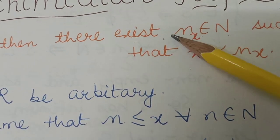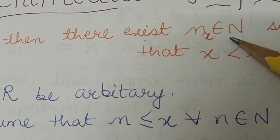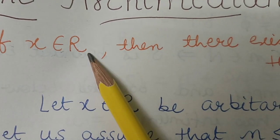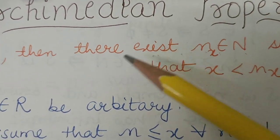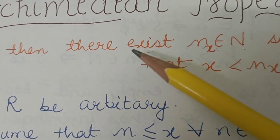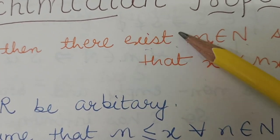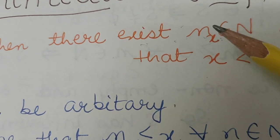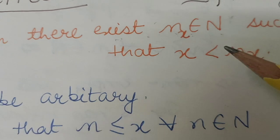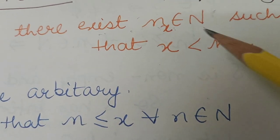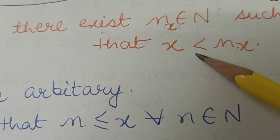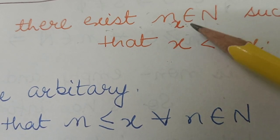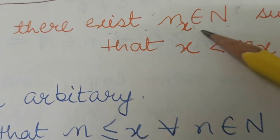Let's go through this statement one by one so we can understand it clearly. The theorem says: if x belongs to the real numbers, then there exists n, a natural number, such that this natural number n is greater than x — where x belongs to real numbers and n belongs to natural numbers.